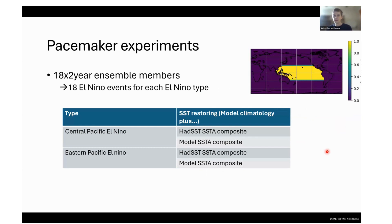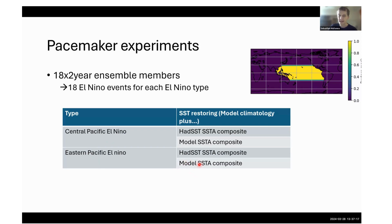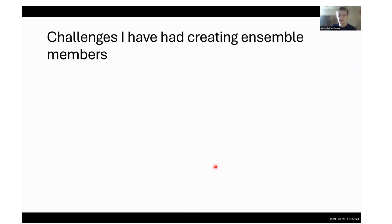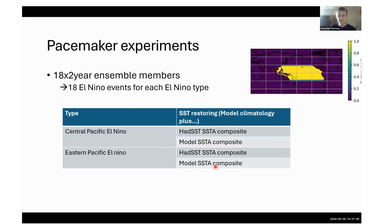How do these biases in spatial ENSO diversity affect the variability in the Indian Ocean? We've run a new set of experiments restoring over a slightly expanded region out to 20 or 25 north and south. We've performed four experiments: two Central Pacific El Niño and two East Pacific El Niño, each forced by the HadSST anomaly composite and the model SST anomaly composite. We've got 18 members of each of these.